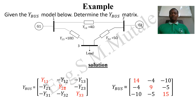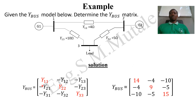For the second row, Y22 is the summation of all admittances connected at bus two: 4 + 5 = 9. Y21 is the admittance between bus two and bus one, which is 4, so it is -4. Y23 is the admittance between bus two and bus three, which is 5, so it is -5.